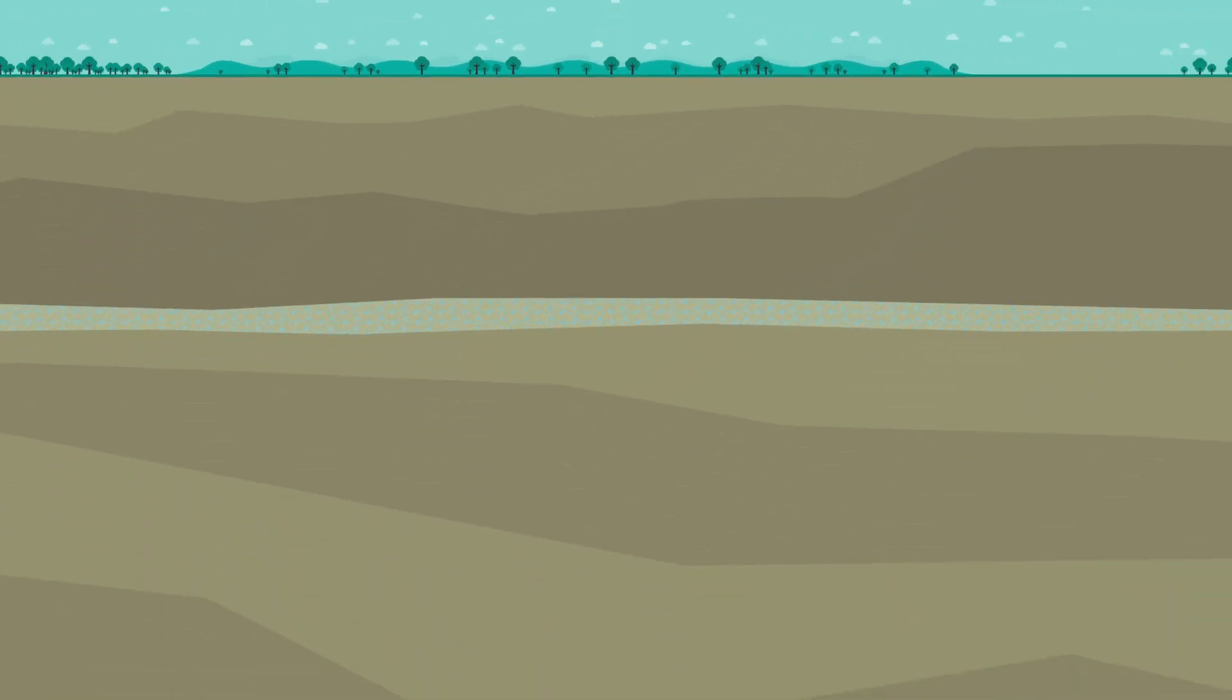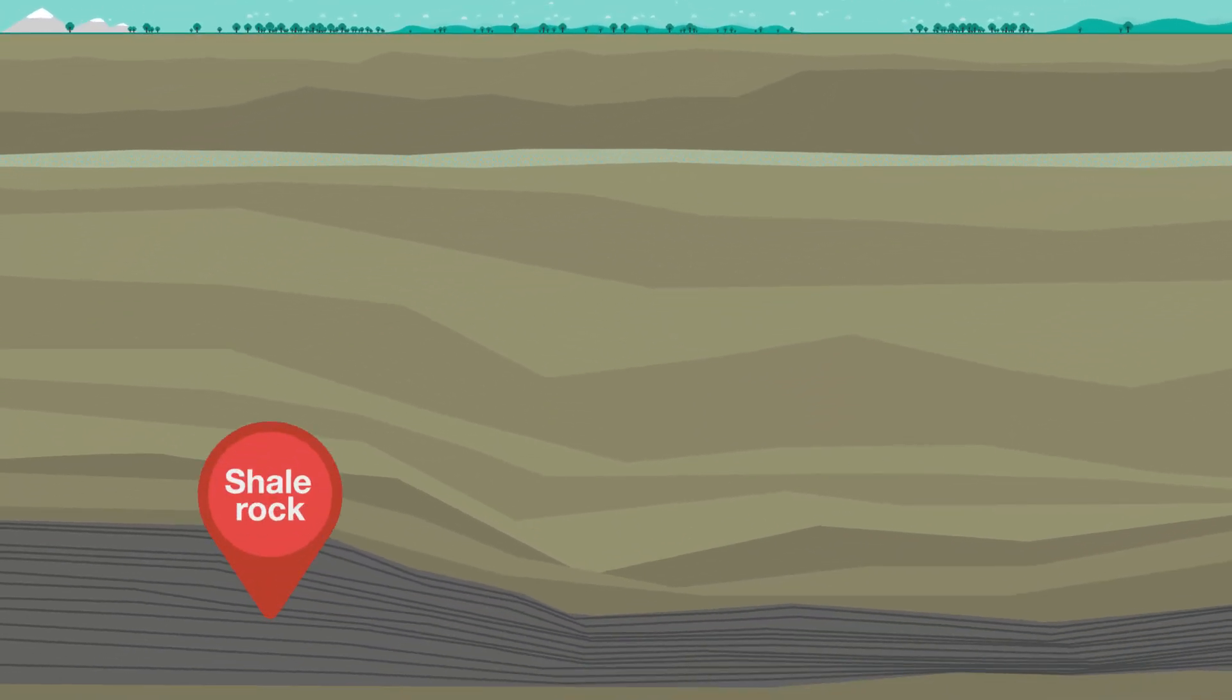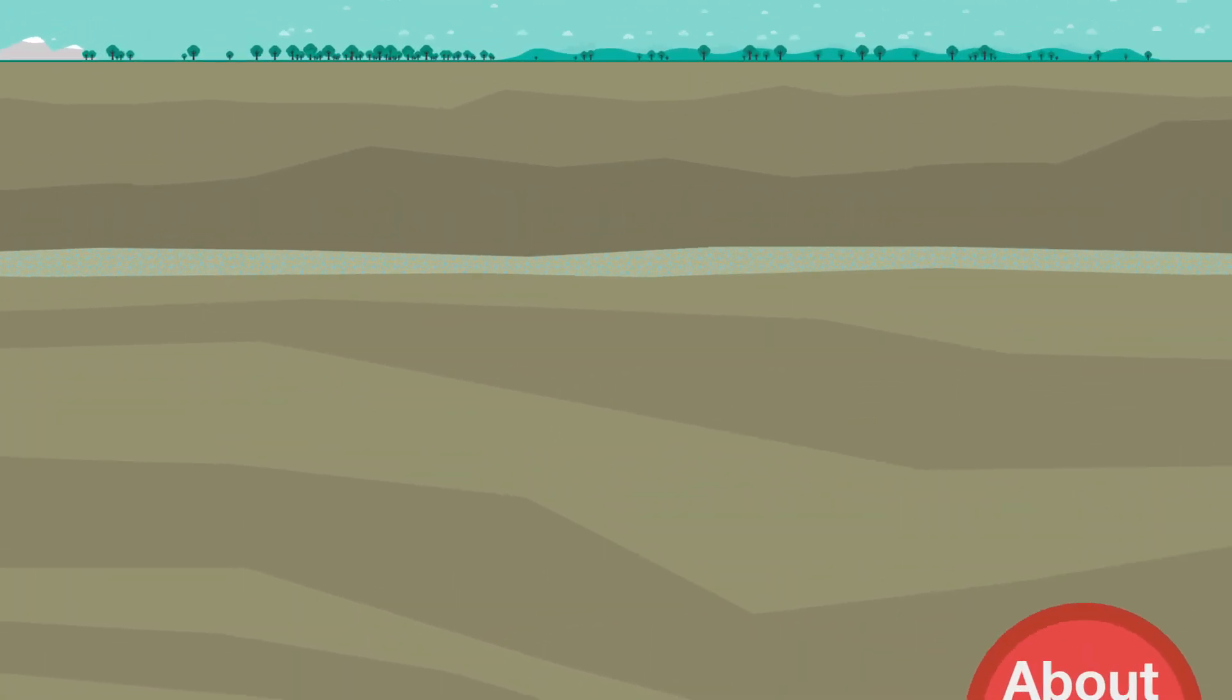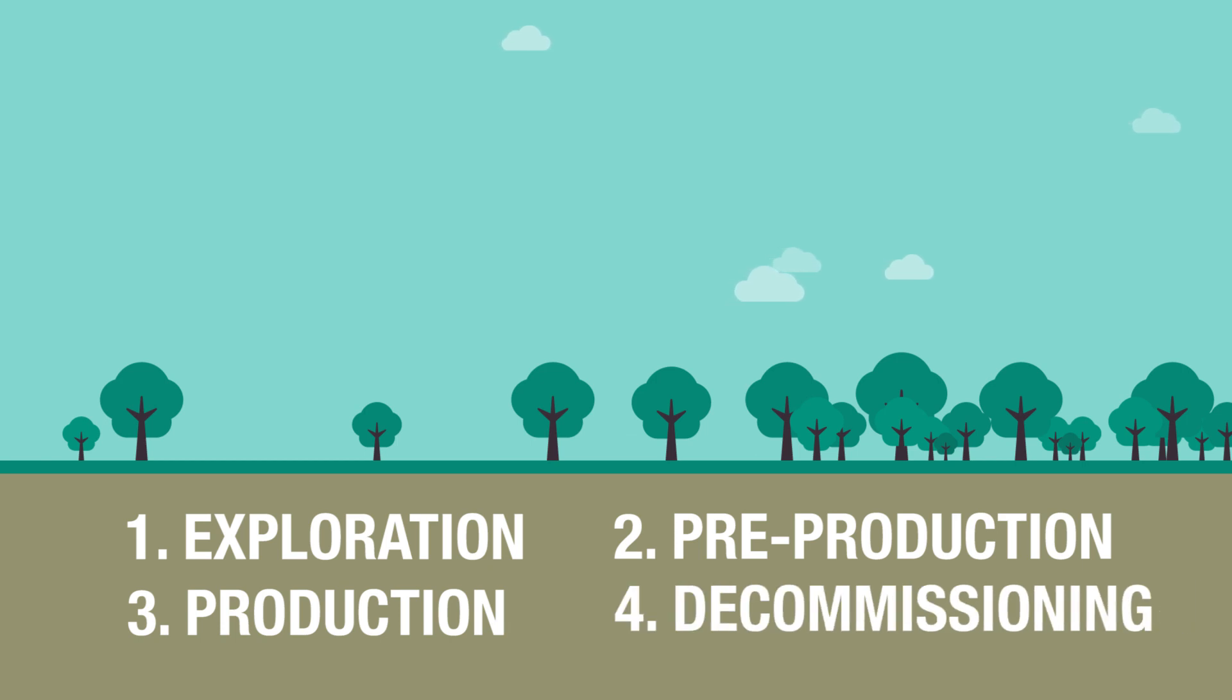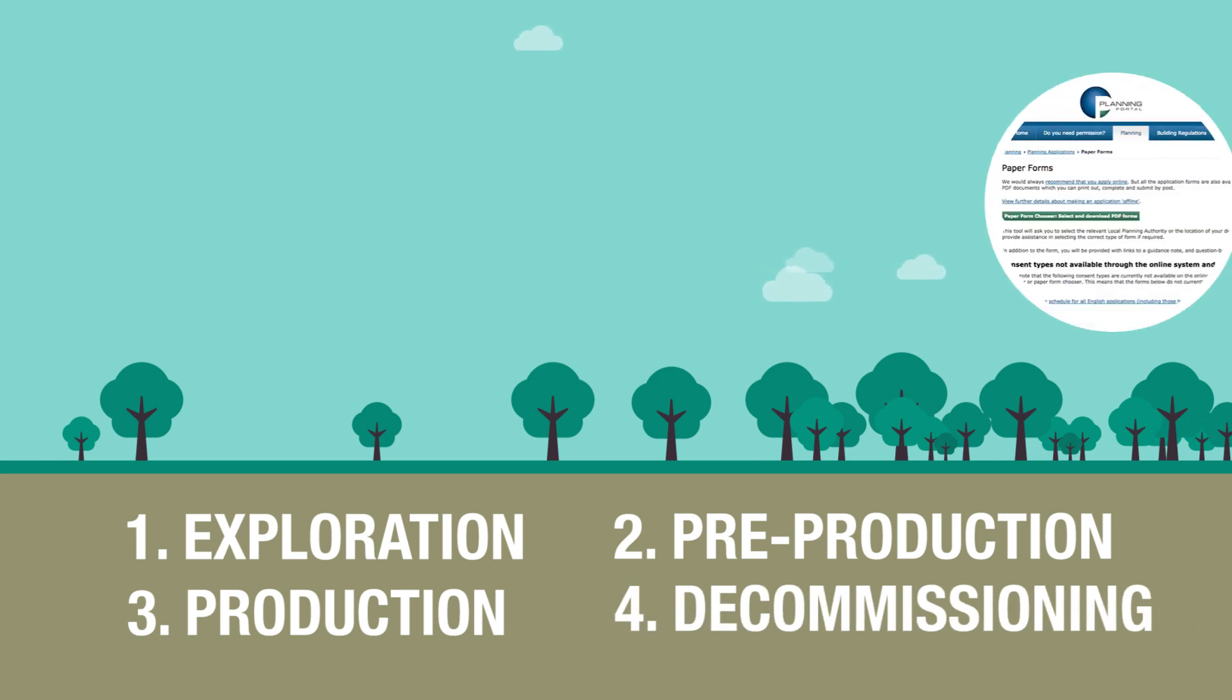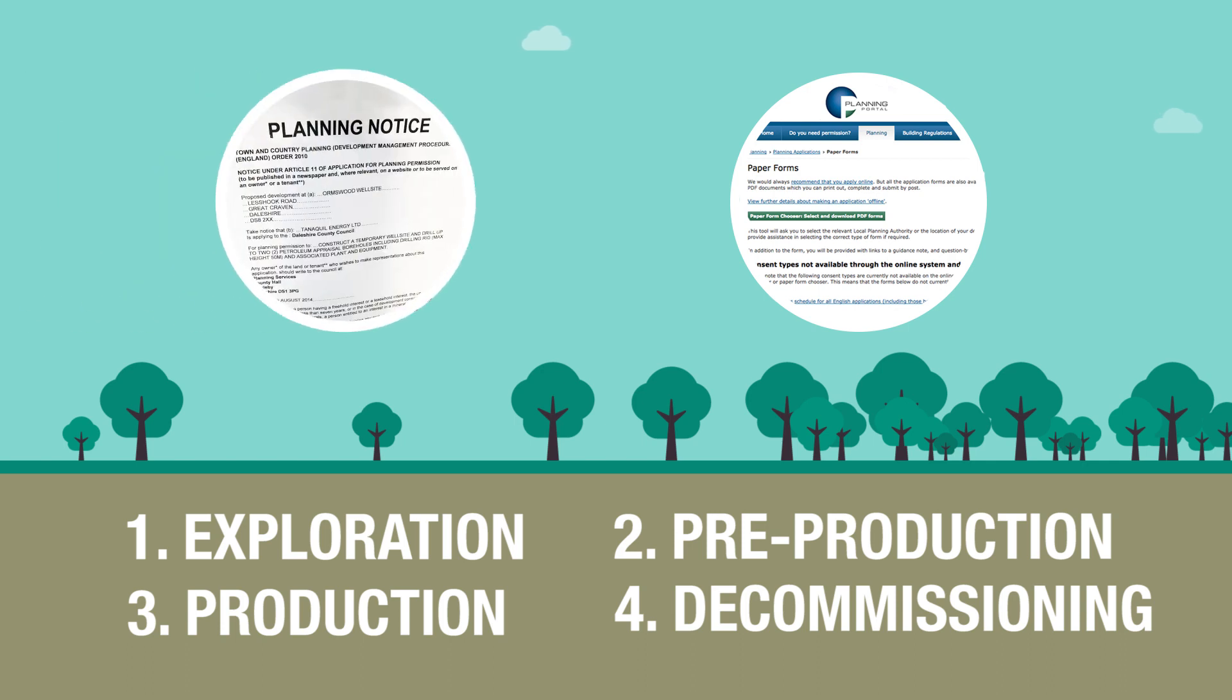Shale gas and oil occur naturally in a layer of impermeable rock around a mile underground. Extracting the gas and oil involves a four-stage process, and at every stage potential operators must get consents from independent regulators and public consultation must take place.